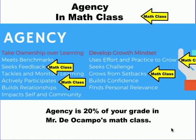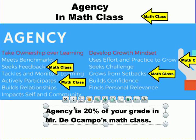Now in Visitation Valley Middle School, particularly in Mr. Dale Campo's 6th grade math classes, agency is 20% of your grade.